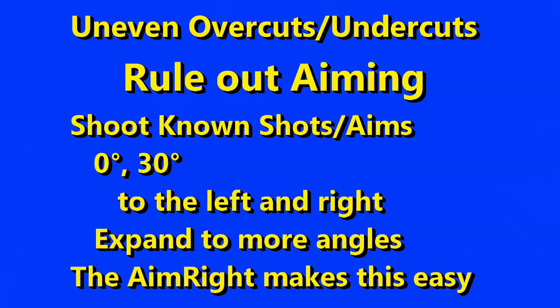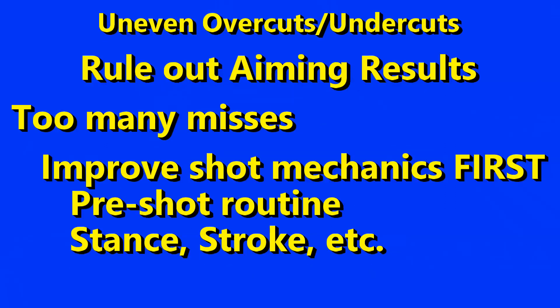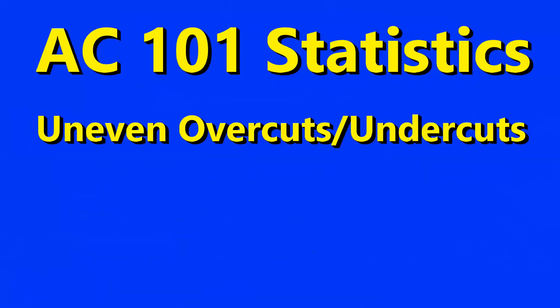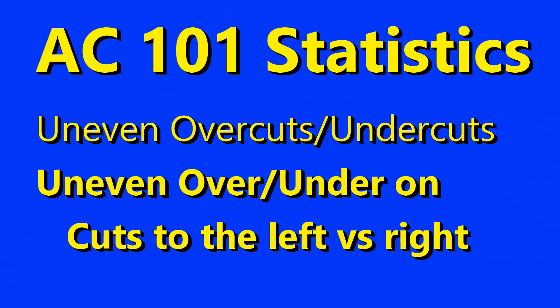This is best done with a training aid such as the AimRight. If you have problems here, then you know to work your stance, pre-shot routine, and stroke. If this isn't your issue, it's probably your perception or your aiming. But it's not enough to just look at the overall balance of overcut versus undercut — we also check these separately on cuts to the left and cuts to the right.